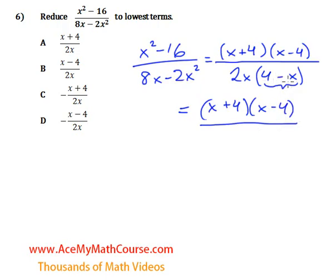And if I factor out a negative 1 from the 4 minus x. Now, the 2x is just going to wait patiently outside. If I factor out a negative 1, I will basically switch the signals inside. 4 divided by negative 1, negative 4. Negative x divided by negative 1, plus x.